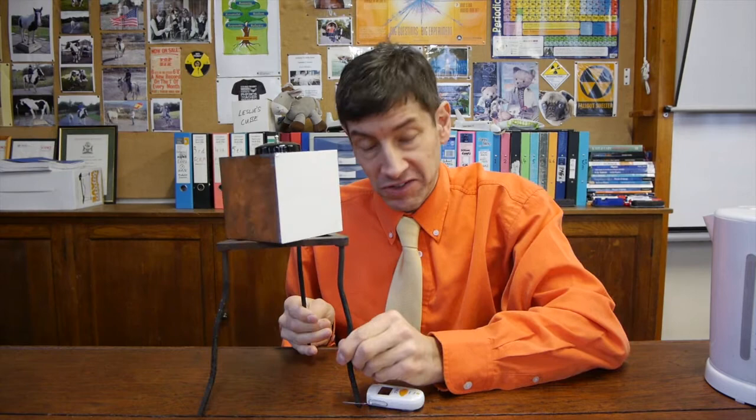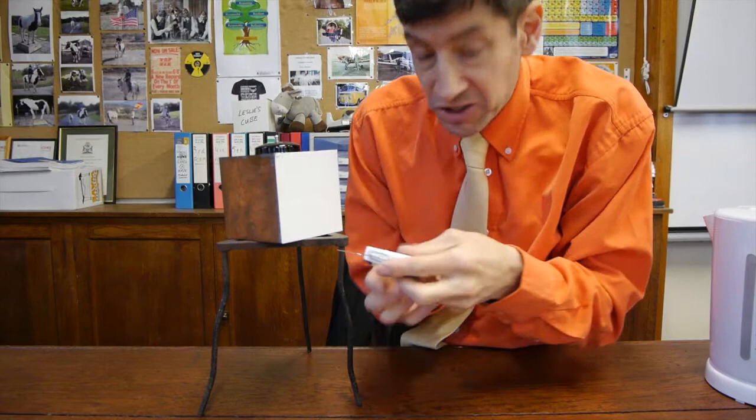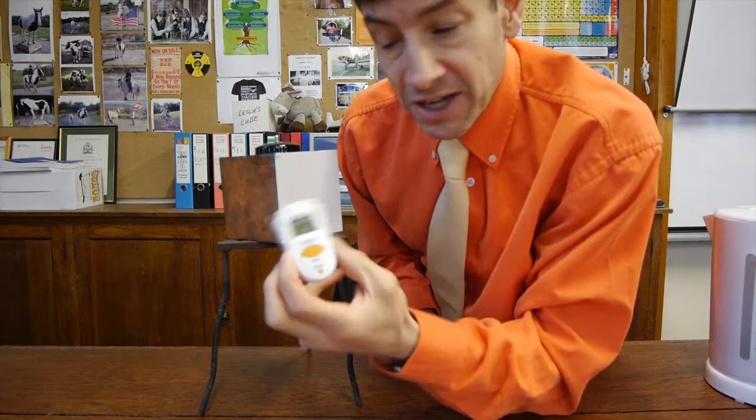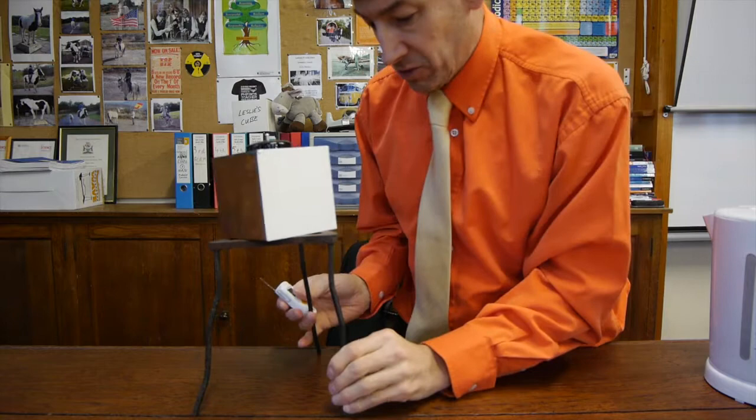And I'll just read out the readings to you if they can't be seen on the camera very well. So the white side of the cube has just given 84.9 degrees. So 84 degrees. We'll do the black side of the cube. Well, 85.0. So the white and black, almost no difference.